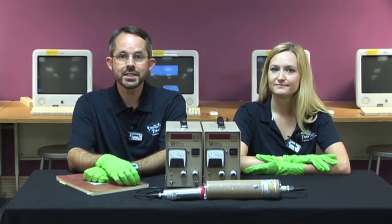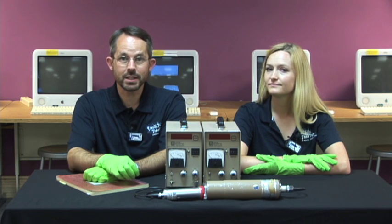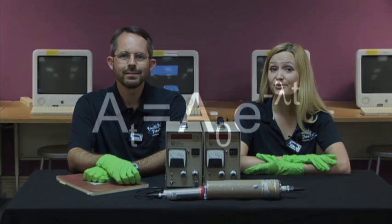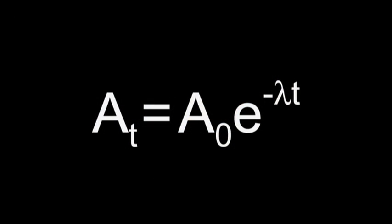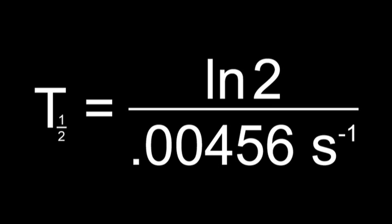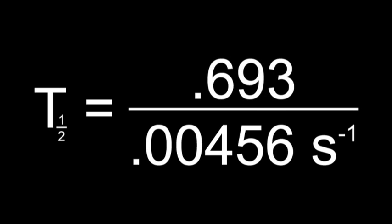Knowing the decay constant is nice, but the decay constant isn't the same thing as the half-life. Fortunately, it's easy to calculate the half-life once you know the decay constant. It's a fairly simple matter to use the activity equation to show that the half-life of a substance is equal to the natural log of 2 divided by its decay constant. You know the decay constant, and you know that the natural log of 2 is about 0.693. Do the division, and you'll end up with the half-life in seconds.